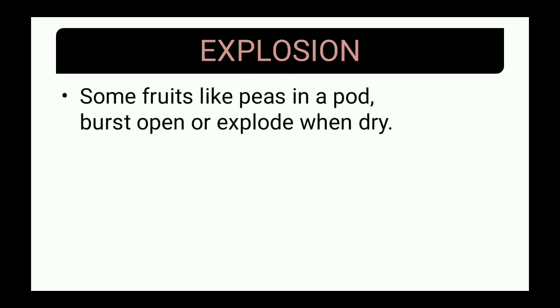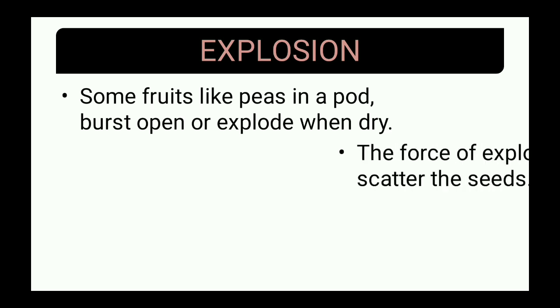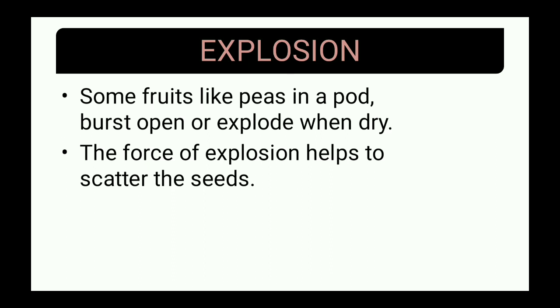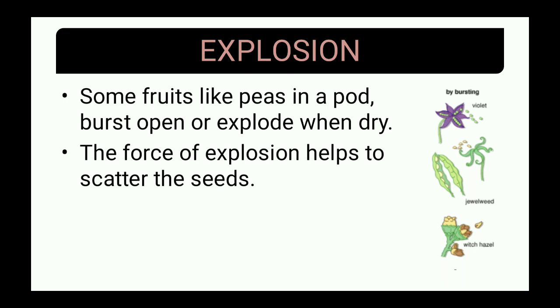Some fruits have a unique capacity — they can explode so that seeds are shot far away from their parent plants. Some fruits like peas in a pod burst open or explode when dry; the force of explosion helps to scatter the seeds. Examples include violet, jewelweed, and witch hazel — these can burst open in such a manner that seeds are thrown away from the parent plants, helping germination.